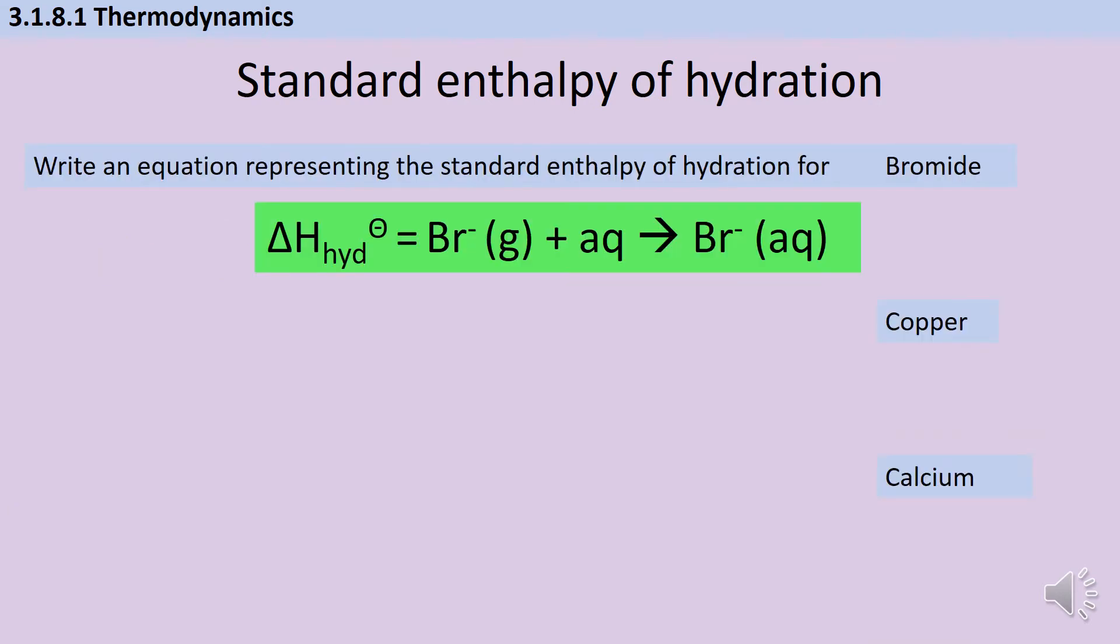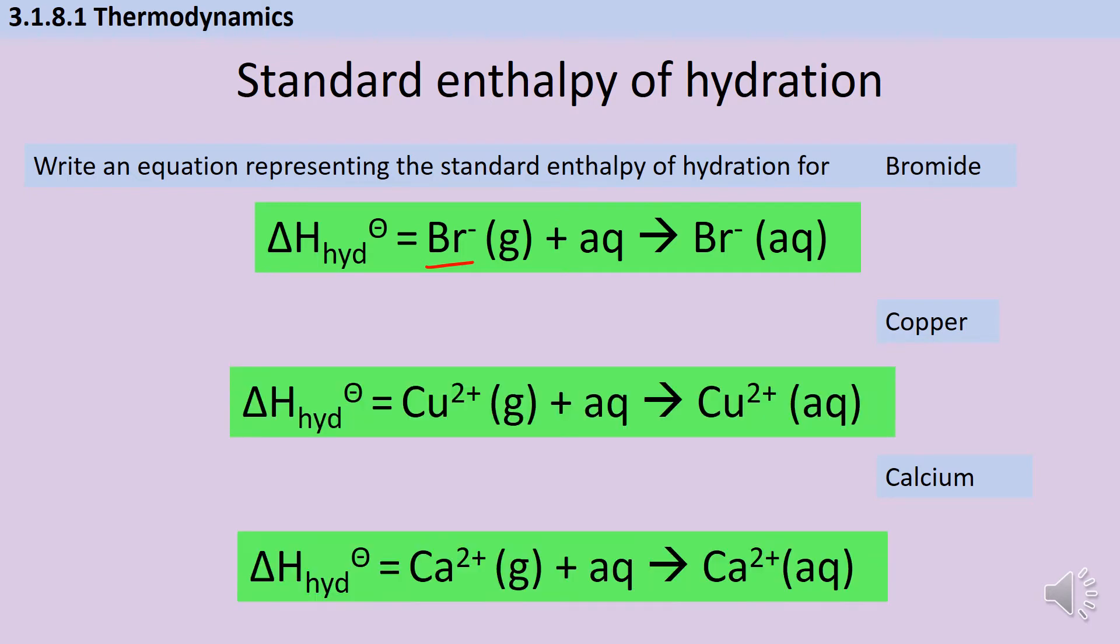In each instance you should have one mole of the standard ion for that element and then you're adding some water to produce aqueous ions. So for copper it's going to look like this, and for calcium it's going to look like this. In each instance we're moving from gaseous state symbols to aqueous state symbols.